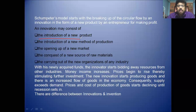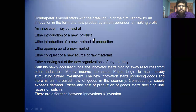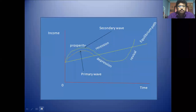There is a system through which there is profit, and after profit, naturally supply exceeds demand and there is a recession. Now look at the diagrammatic representation of Schumpeter's theory of the business cycle.